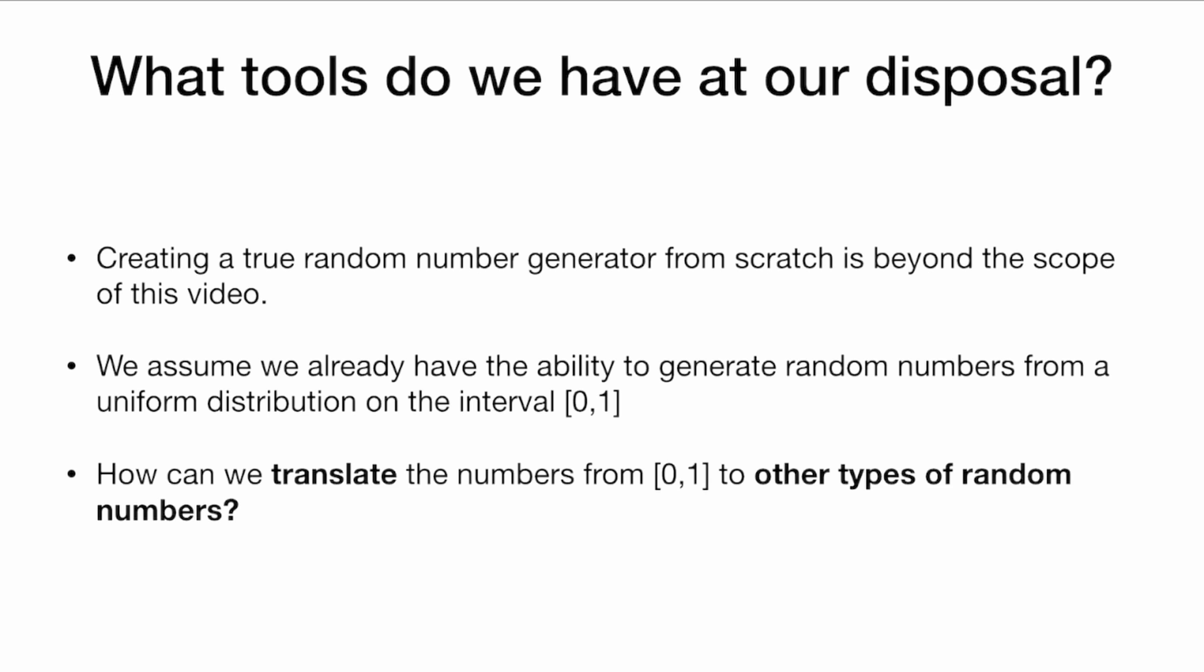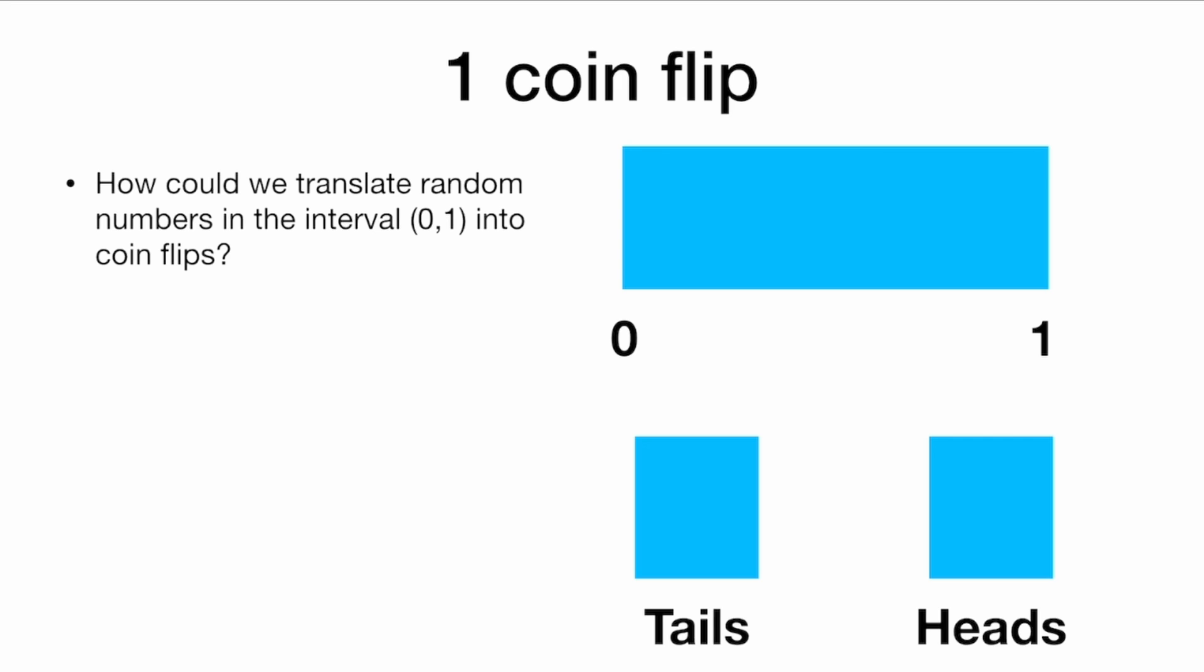Creating a true random number generator from scratch is beyond the scope of this video. We will assume that we already have the ability to generate random numbers from a uniform distribution on the interval from 0 to 1. And how can we translate the numbers from 0 to 1 to other types of random numbers? So let's start with a simple example.